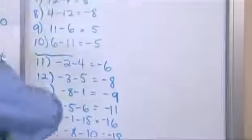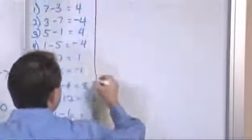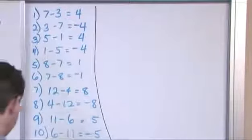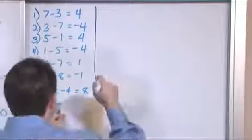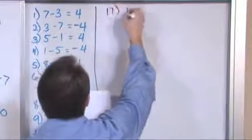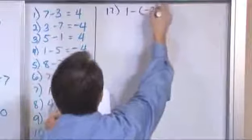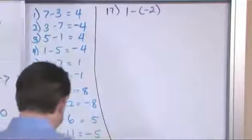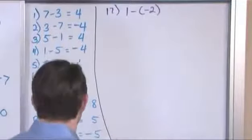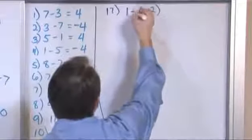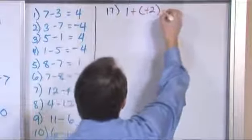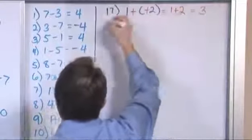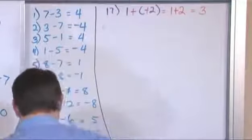So that's a good chunk of problems. Let's keep working some more — let's draw a line and switch colors to liven the board up a little bit. What if we have, for problem 17, 1 minus a negative 2? Because we have subtracting a negative sign, we're basically going to add the opposite. So this is going to be 1 plus 2, and that's going to equal positive 3.